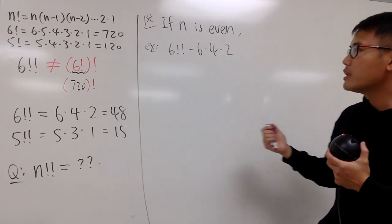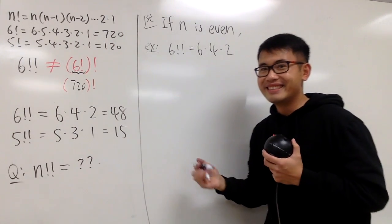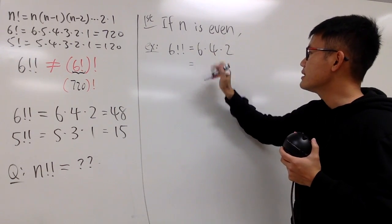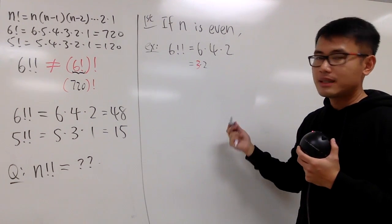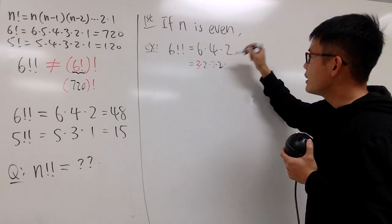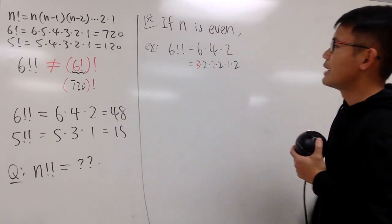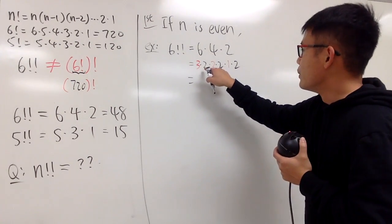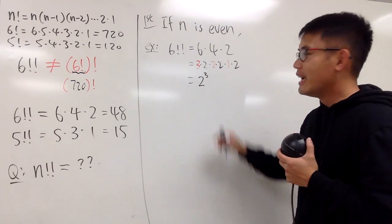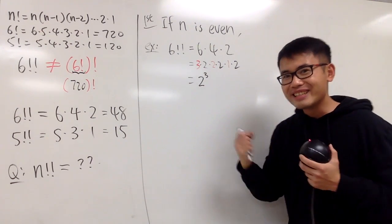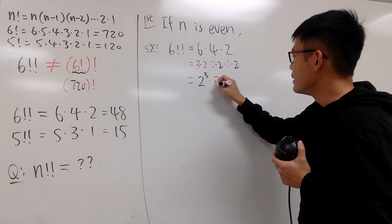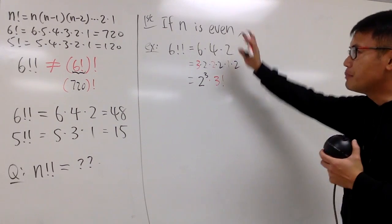I want to build a connection between double factorial and single factorial. Notice that 6, 4, and 2 are all even numbers. We can write 6 as 3 times 2, the 4 as 2 times 2, and the 2 as 1 times 2. This gives us 2 times 2 times 2 — three of them — which is 2 to the 3rd power, multiplied by 3 times 2 times 1, which is 3 factorial.